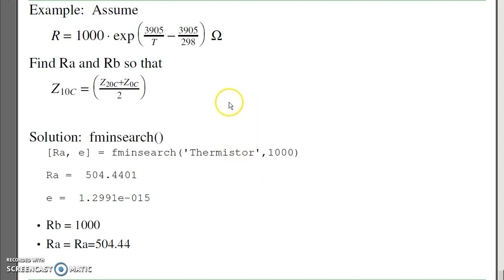The trick is how to find those two points. The constraint is the resistance varies with temperature by the thermistor equation. I want to make the impedance at zero degrees C the average of the two endpoints. Find RA and RB.